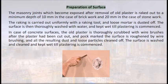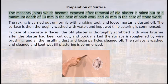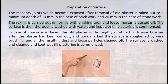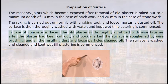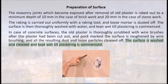Preparation of surface for repair: masonry joints exposed after removal of old plaster are raked out to a minimum depth of 10 mm for brickwork and 20 mm for stone work. Loose mortar is dusted off and the surface is thoroughly washed and kept wet till plastering commences. For concrete surfaces, old plaster is scrubbed with wire brushes, the surface is roughened, and all dust and loose particles are cleaned off.